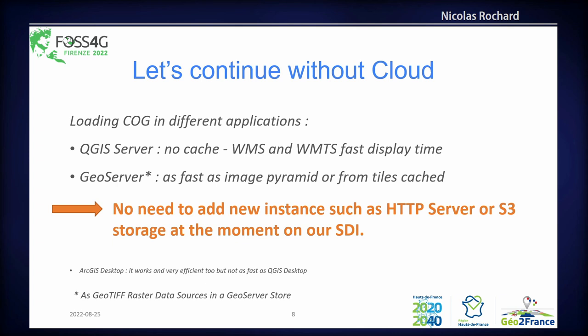We then looked at how COG is read server-side. In QGIS without any cache settings or map proxy, WMS and WMTS were displaying really fast - good news. From GeoServer, we loaded it as a standard GeoTIFF raster data source. The performance was really amazing - displaying as fast as the image pyramid cached in the SDI. This was also good news for our IT department because we don't need to request a new HTTP server or S3 bucket object storage.